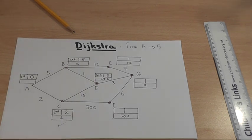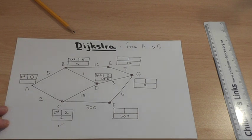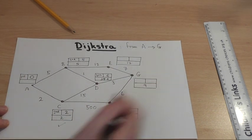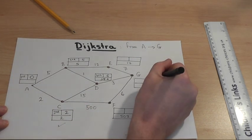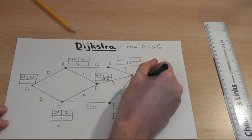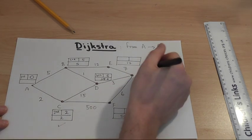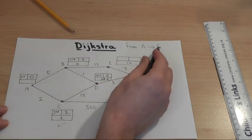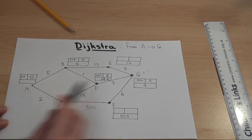Then, look for the next permanent, sorry, the next temporary number. The lowest one possible. 17, 9, 502. 9 is the next lowest. 9, 5th. Ah, I've actually got to G. So it tells me that from A to G, the shortest route is 9.